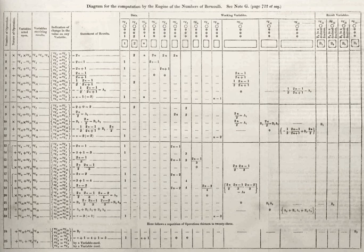Because an algorithm is a precise list of precise steps, the order of computation is always crucial to the functioning of the algorithm. Instructions are usually assumed to be listed explicitly, and are described as starting from the top and going down to the bottom — an idea described more formally by flow of control. This discussion of the formalization of an algorithm has assumed the premises of imperative programming, the most common conception. Unique to this conception is the assignment operation — setting the value of a variable. For alternate conceptions, see functional programming and logic programming.